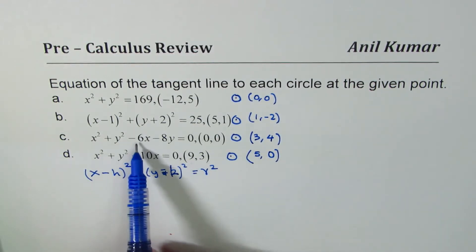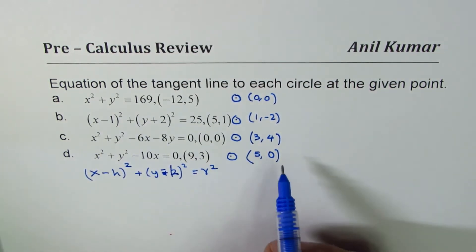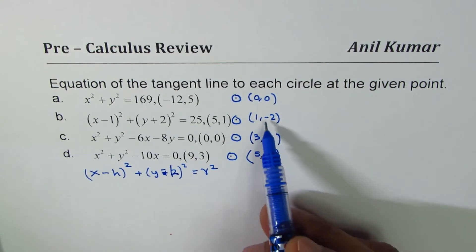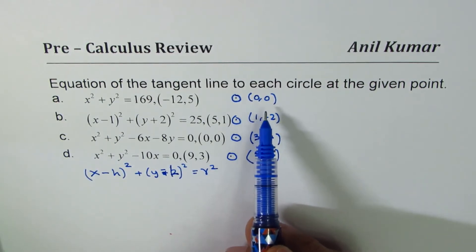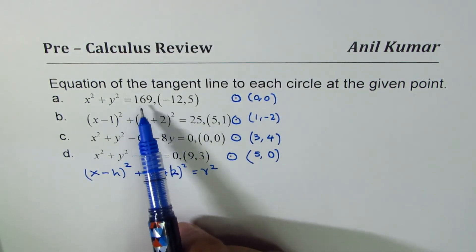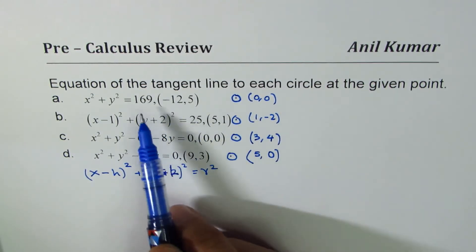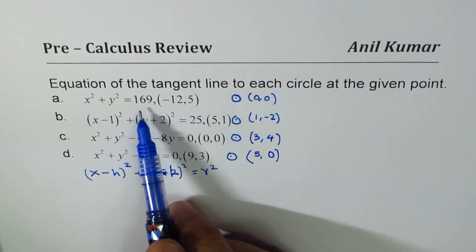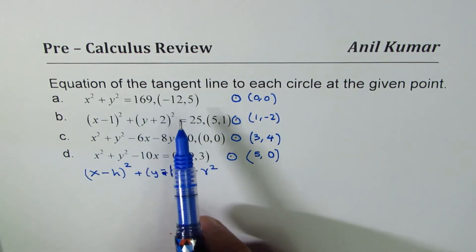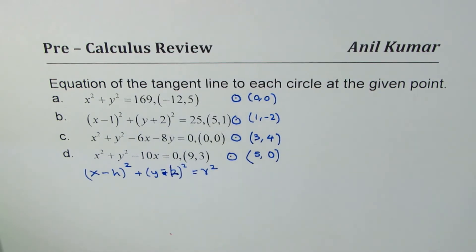So we did minus half of these values to find those points of circle, h and k. We'll take up this in details in another video also. Now the idea is, we know the center of the circle. We also know the radius, because radius is the square root of that number. Now let us see how to find equation of tangent line for such circles.